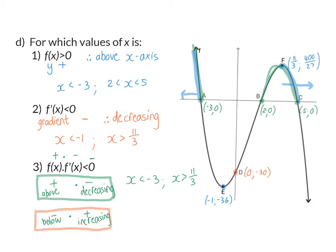For the second option, we look at values below the x-axis — between A and B, and after C — where we also need an increasing gradient. The only part satisfying this is between E and B, giving -1 < x < 2. So in total, question 3 has three separate parts: x < -3, or -1 < x < 2, or x > 11/3.